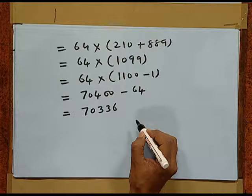That equals 70400 minus 64, and that is 70336. Thus, 70336 is the sum of all the numbers between 100 and 1000 which are multiples of 7.